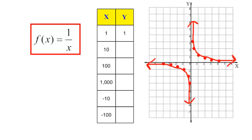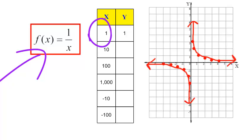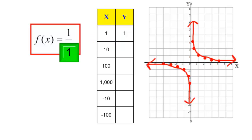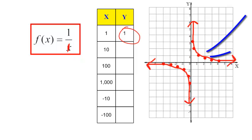We are going to talk about graphing rational functions and the way they shift. If I have the function f of x is equal to 1 over x, if x is 1, then y, which is f of x, would be 1 over 1, which is just 1. That is the point (1, 1).